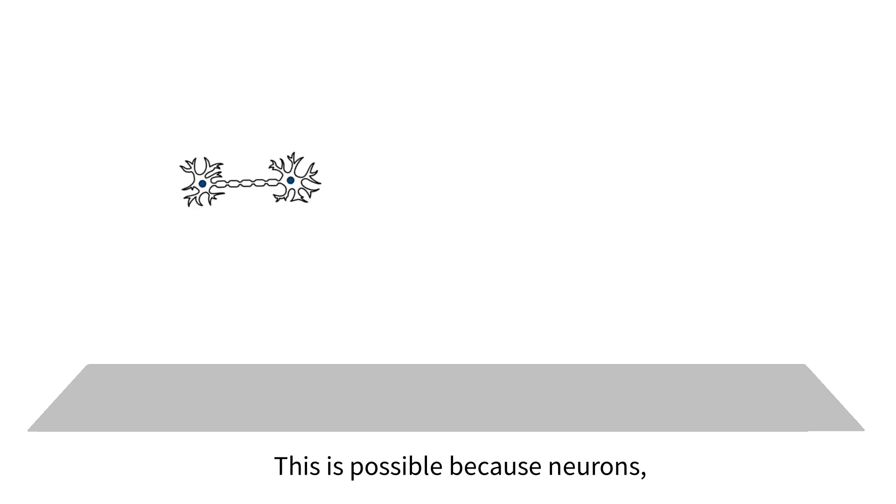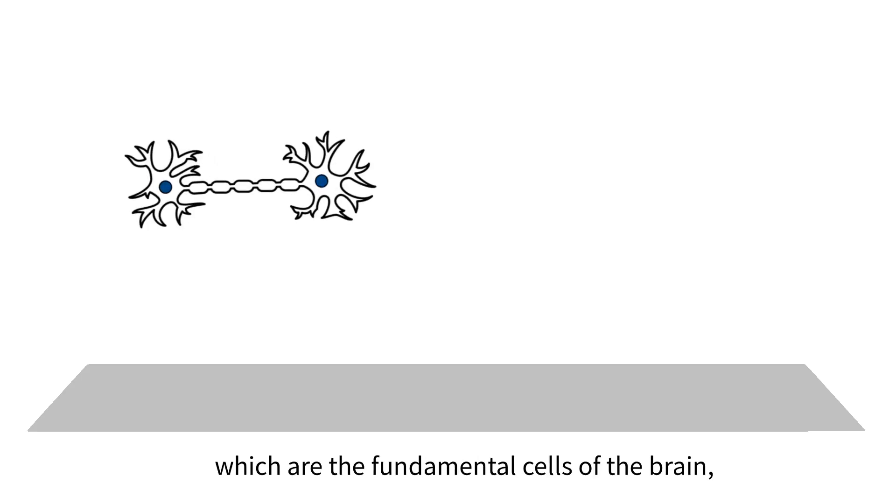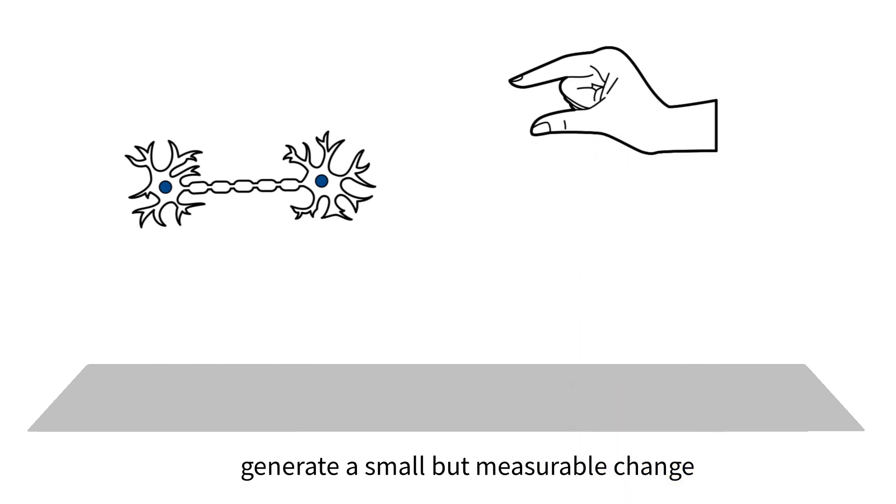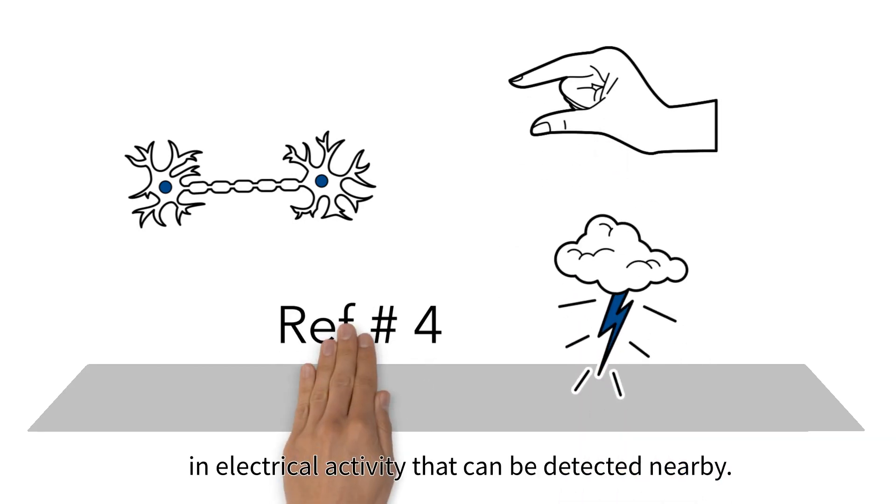This is possible because neurons, which are the fundamental cells of the brain, generate a small but measurable change in electrical activity that can be detected nearby.